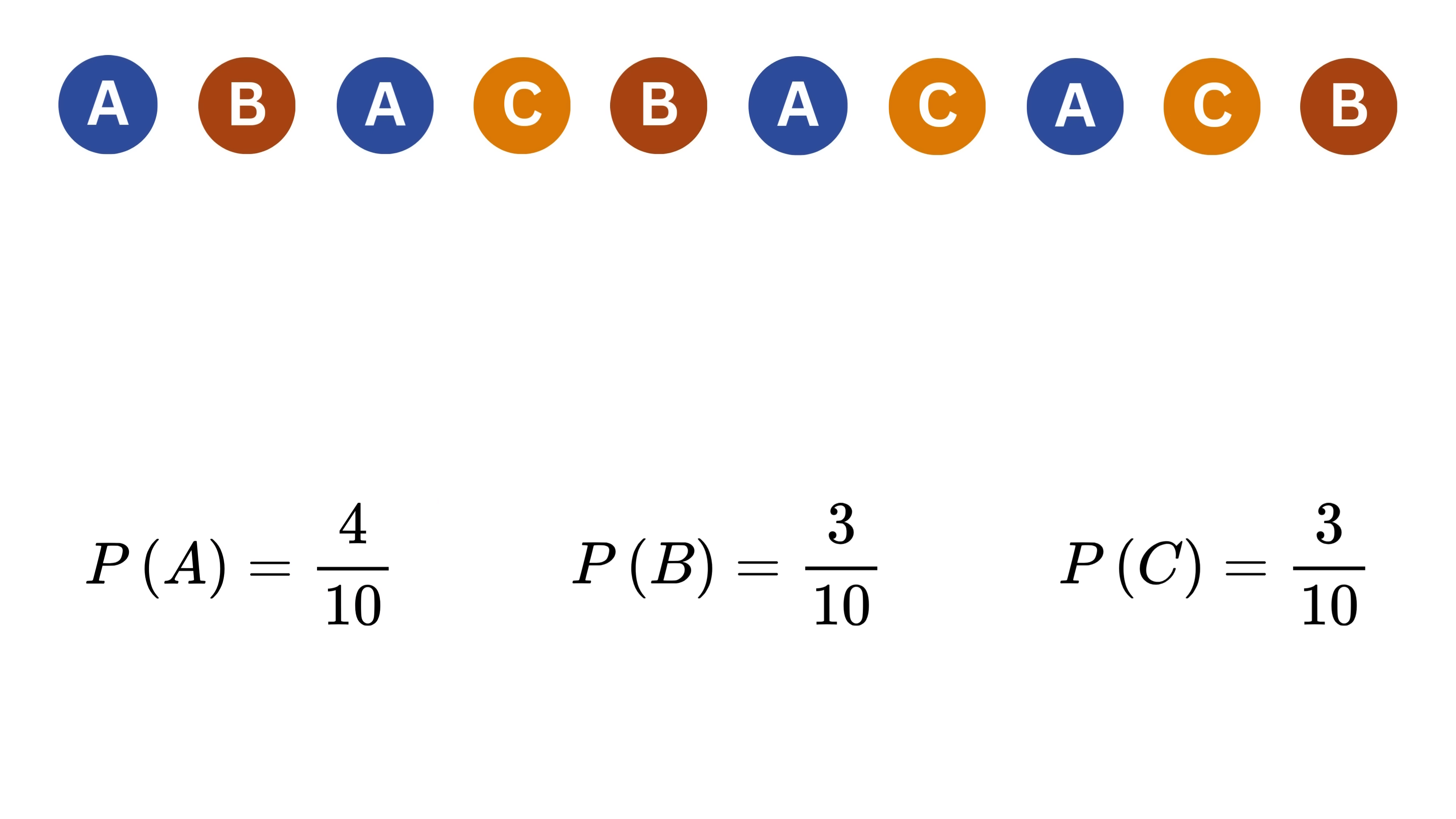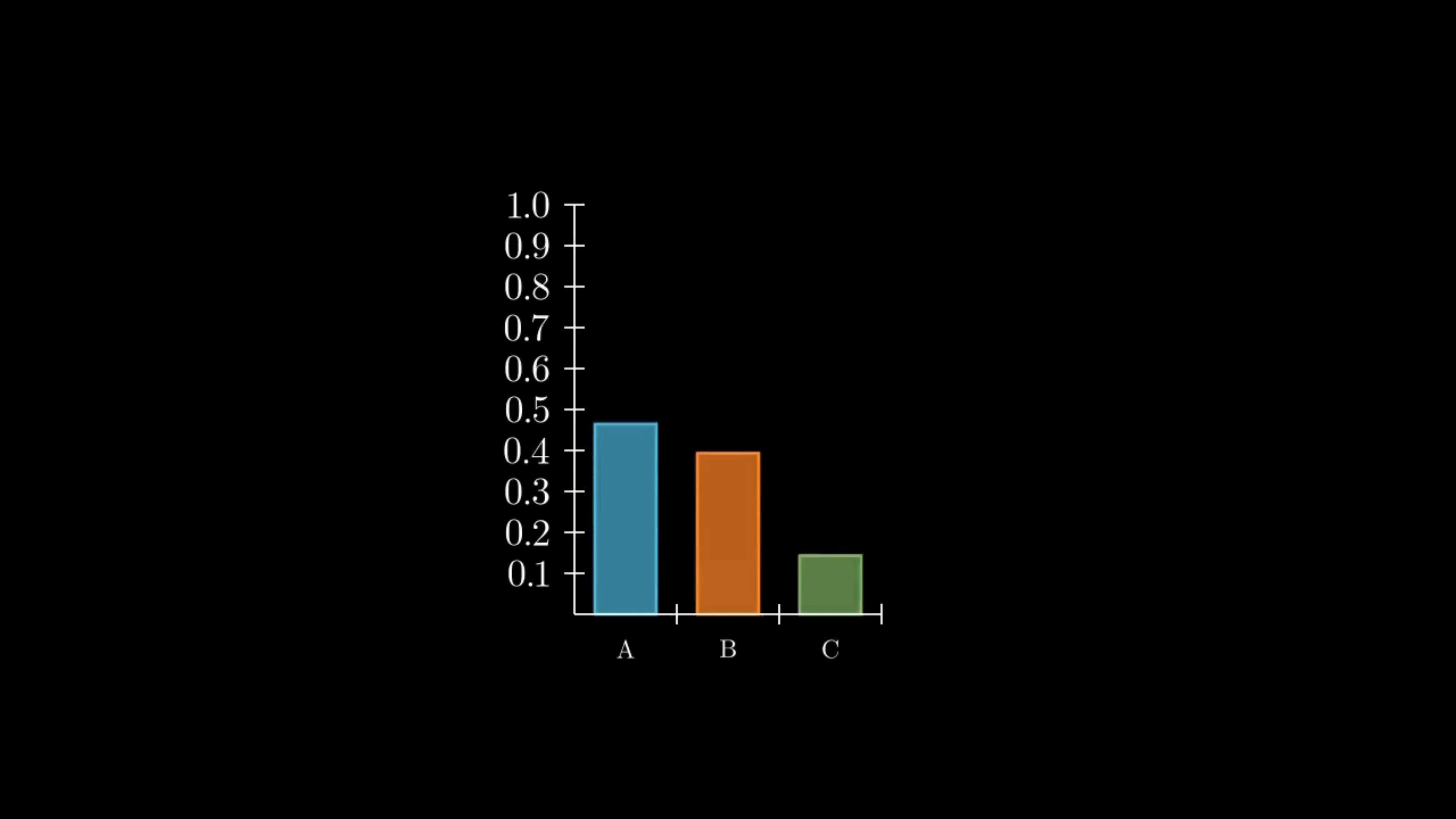But what if we repeat this process not just 10 times, but say 100,000 times? Will the probabilities keep changing forever?